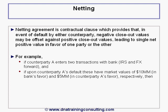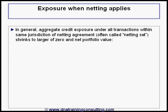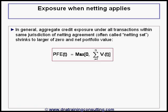respectively, then the bank's exposure will be limited to $5 million if legally enforceable netting is in place, versus $10 million if it is not. More generally, the aggregate credit exposure arising under all transactions within the same governing law jurisdiction of the netting agreement, often called the netting set, shrinks to the larger of zero and the net portfolio value, as shown in this equation.